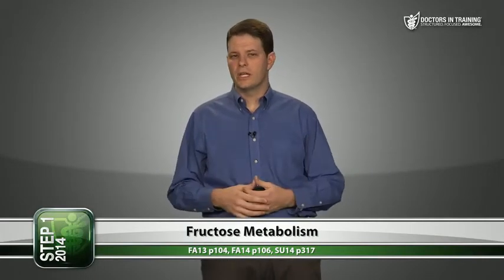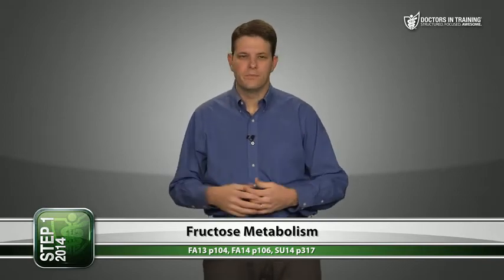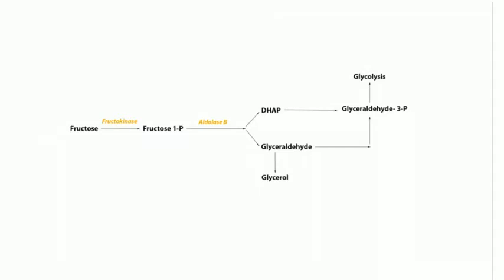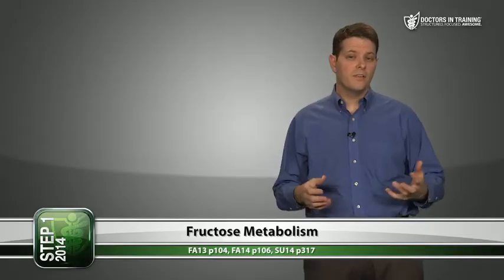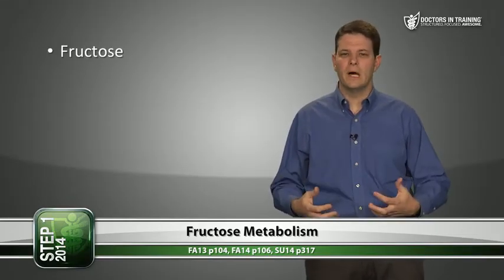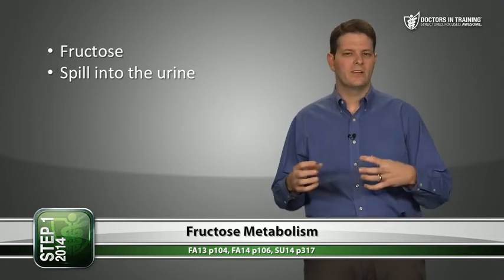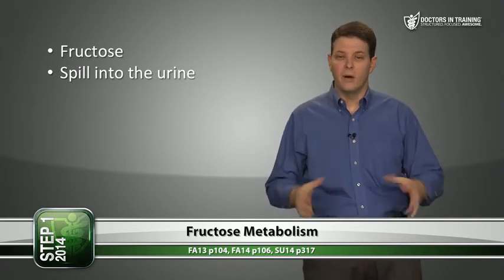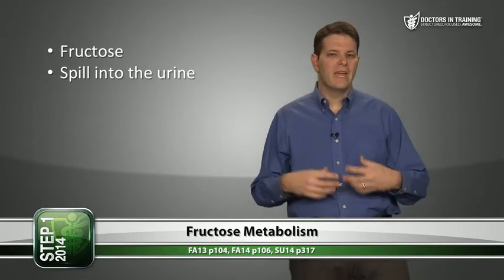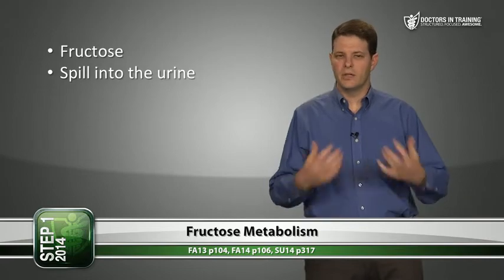Now let's talk about other sugars the body can use for energy. Fructose is a simple sugar found in fruit. You don't need to memorize the full pathway, but know two disorders: Essential fructosuria occurs when you're deficient in fructokinase — fructose builds up in blood and spills into urine, but it's a benign disease since the sugar doesn't get trapped osmotically in cells. The only problem is inability to utilize fructose as energy.